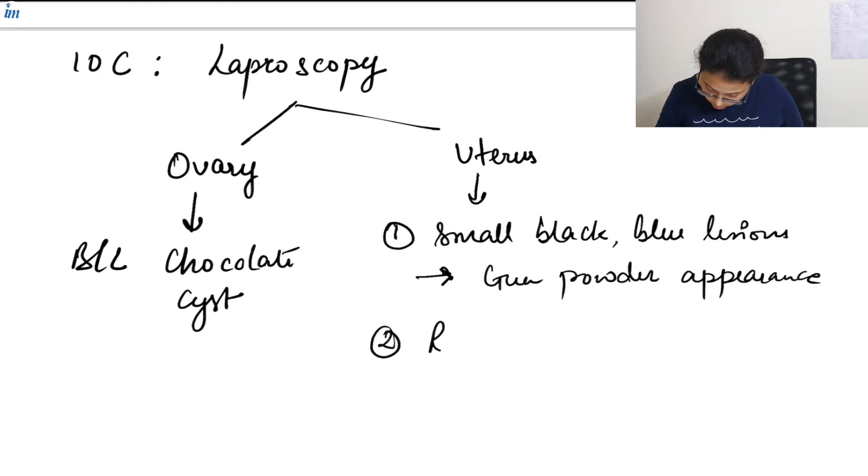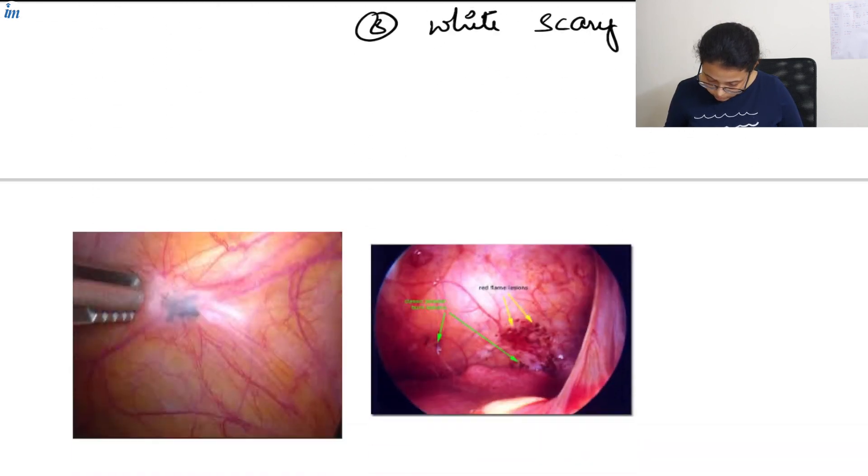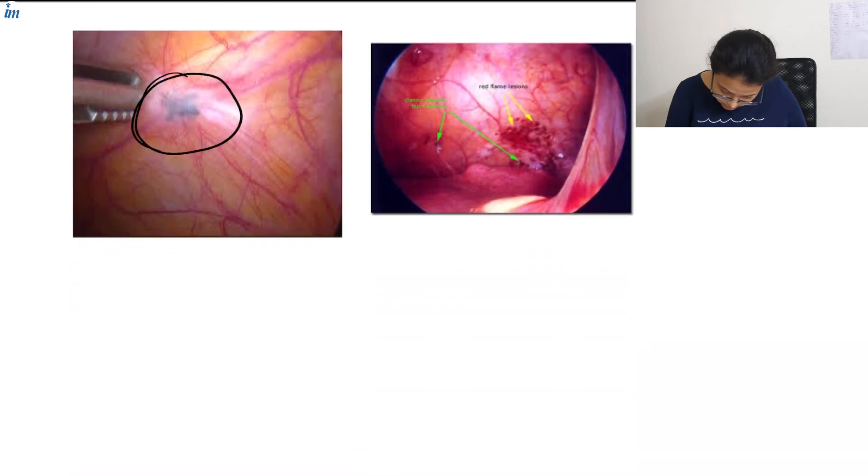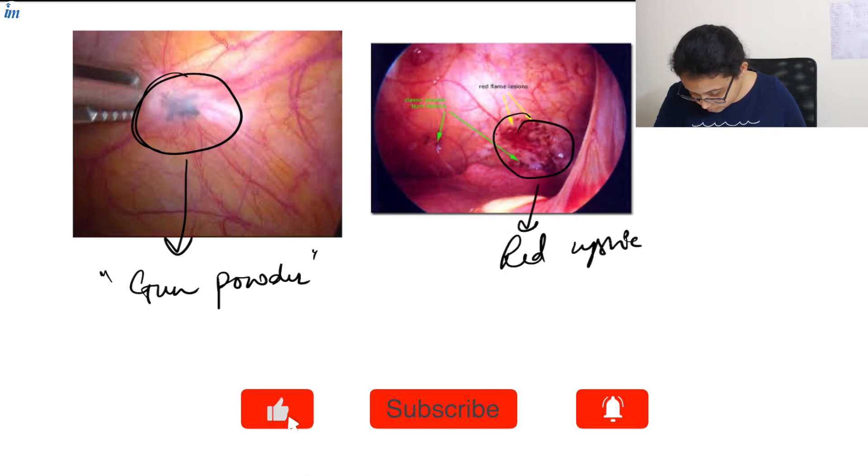And then we also have red cystic lesions and then there are white scarred lesions. Now in this picture this is the gunpowder appearance and these are the red cystic lesions.